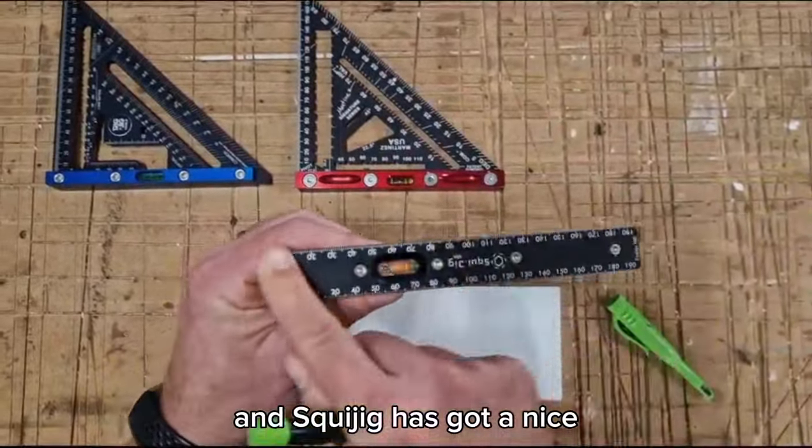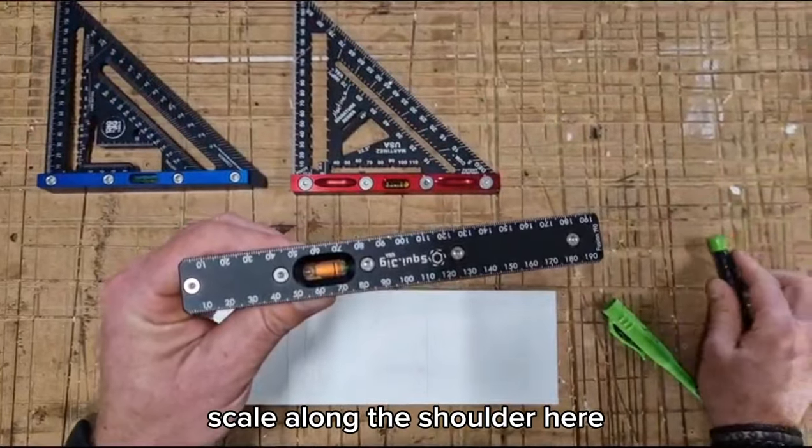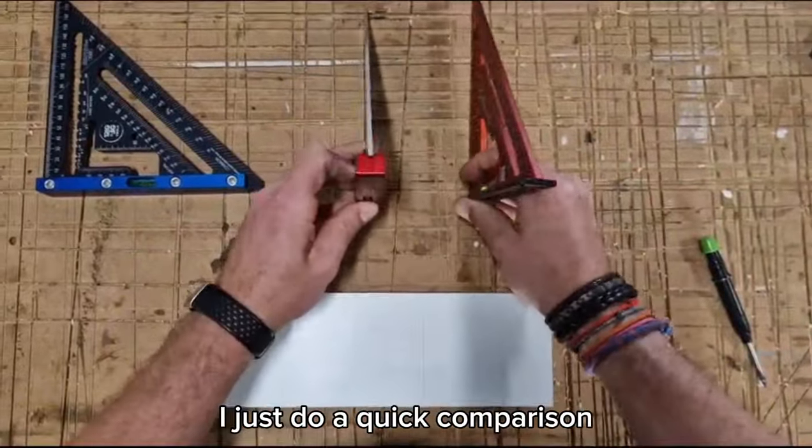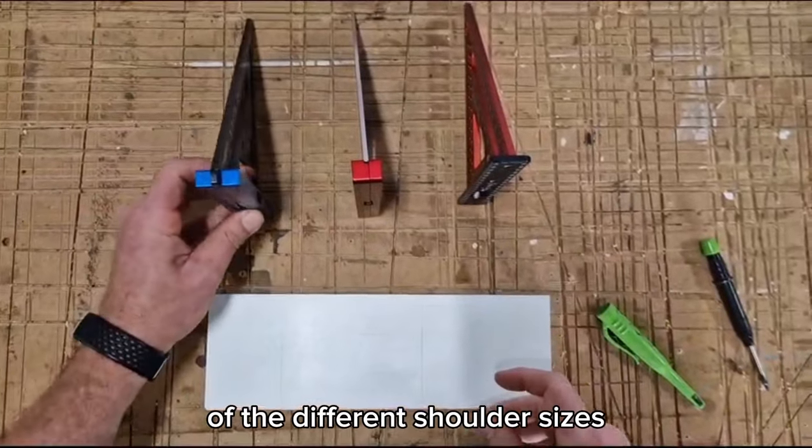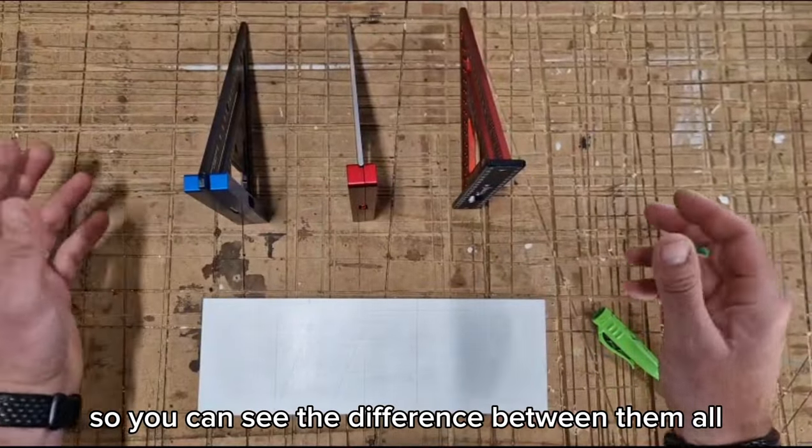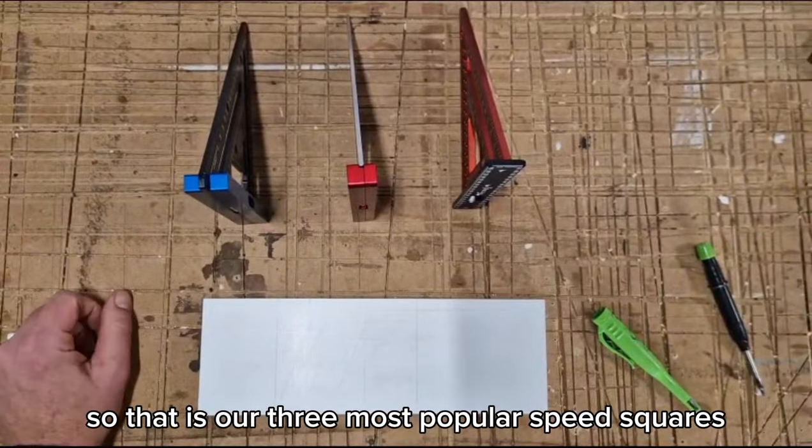And the Squee Jig has got a nice scale along the shoulder here. I'll just do a quick comparison of the different shoulder sizes so you can see the difference between them all. So that is our three most popular speed squares.